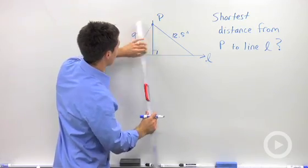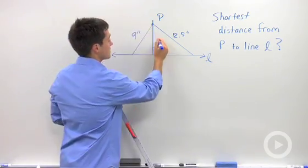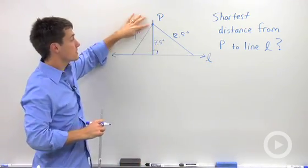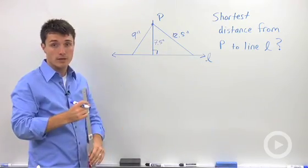And just for giggles, let's figure out what that distance is. That distance is seven and a half inches. So the shortest distance from P that's not on a line to a line is going to be a perpendicular.